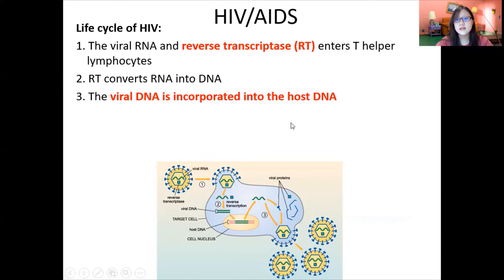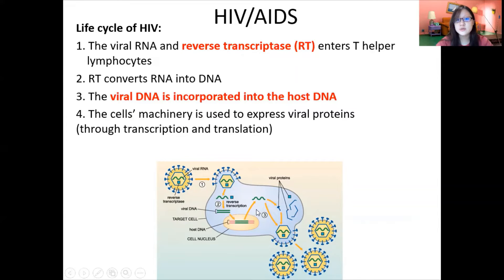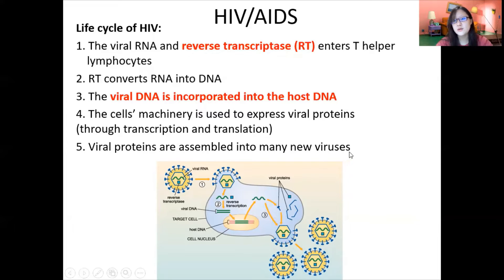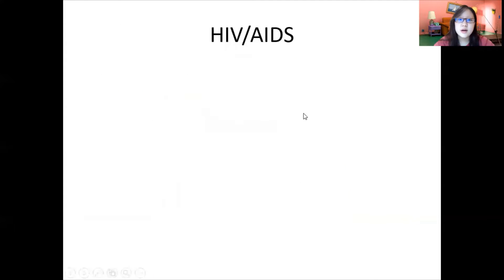The host cell — in this case a T-helper lymphocyte — will not be able to function normally. Instead, the cell's machinery is used to express viral proteins through transcription and translation. The virus uses the cell's resources, proteins, and enzymes to make more of itself. Viral proteins are assembled into many new viruses, which is how HIV replicates.